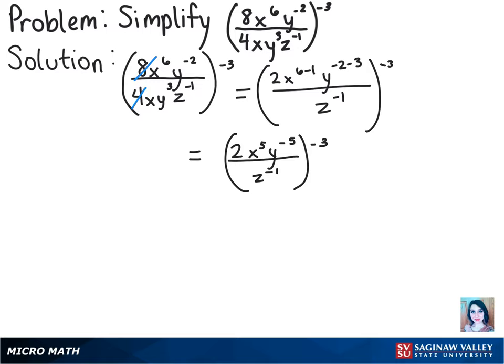Now we can multiply everything in there by that negative third power, which gets us 2 to the negative third power times x to the negative fifteenth times y to the fifteenth over z cubed.